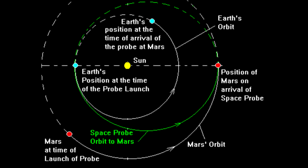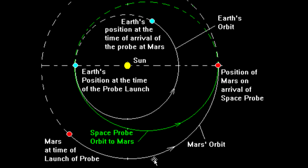A Hohmann transfer orbit is an elliptical orbit that can take a spacecraft from Earth to Mars. This green circle here represents the elliptical transfer orbit. You can also see Earth's and Mars' position at the time of the probe launch. Our spacecraft will go this way in the transfer orbit, Mars will go along this way in its own orbit, and eventually they'll arrive at the same time at the same place right here.